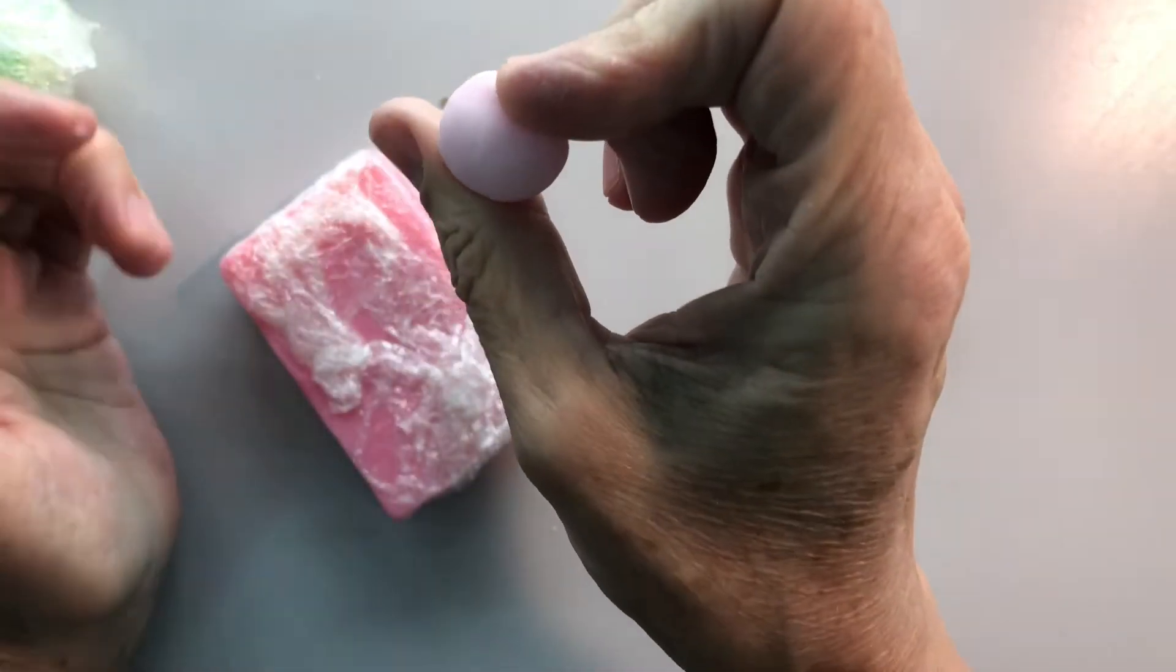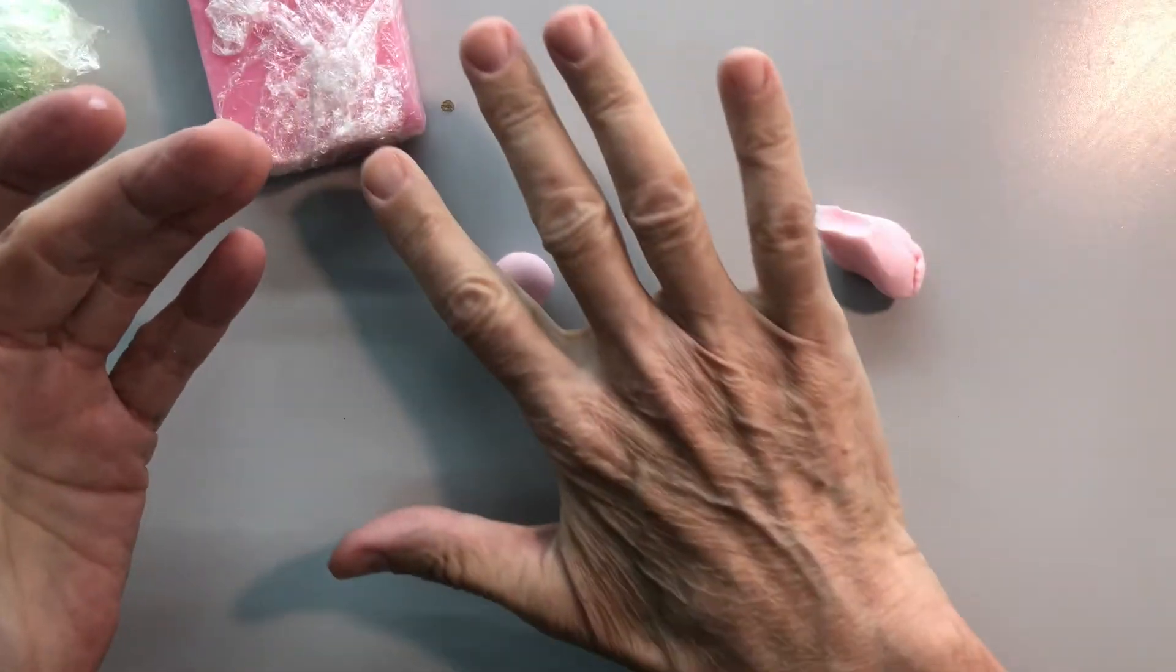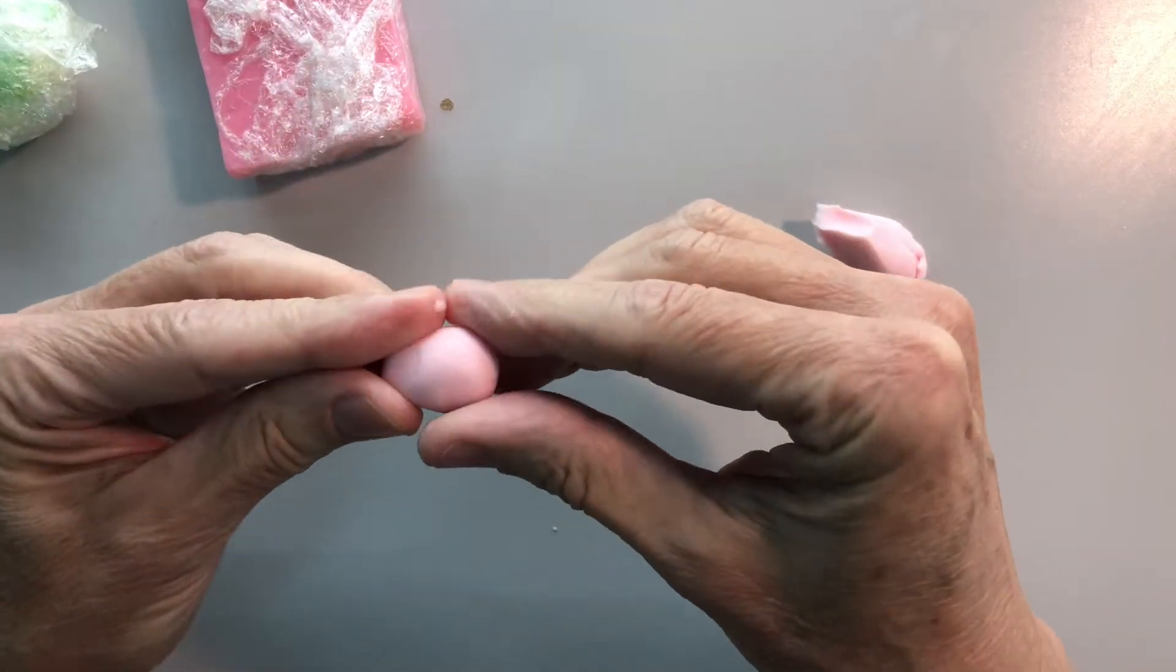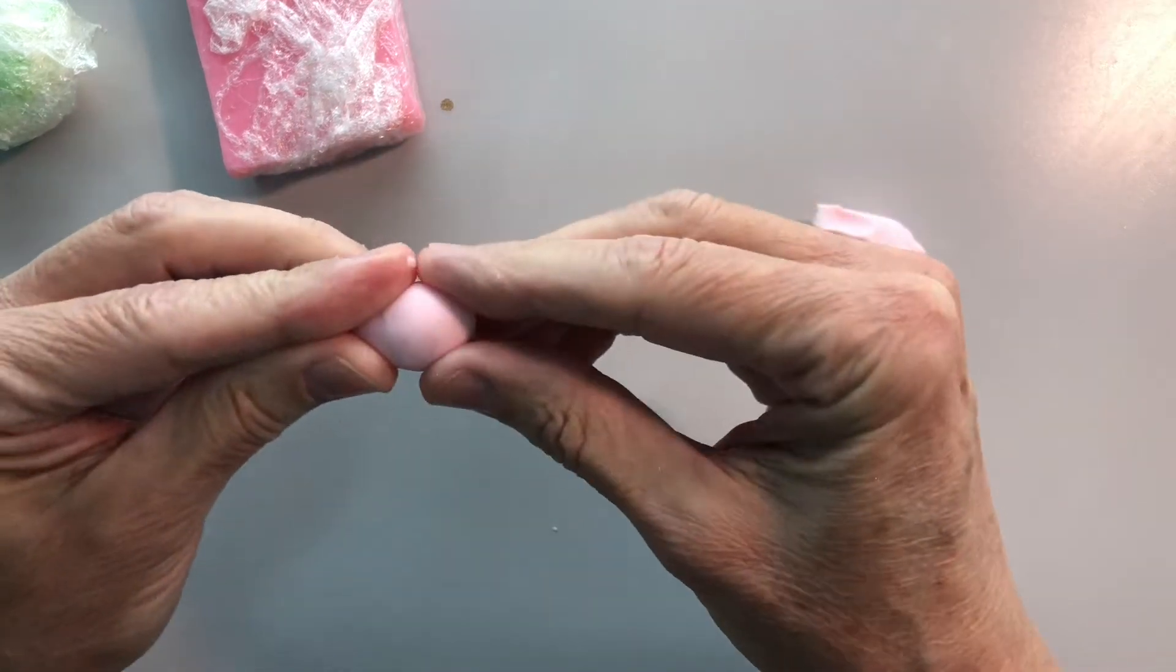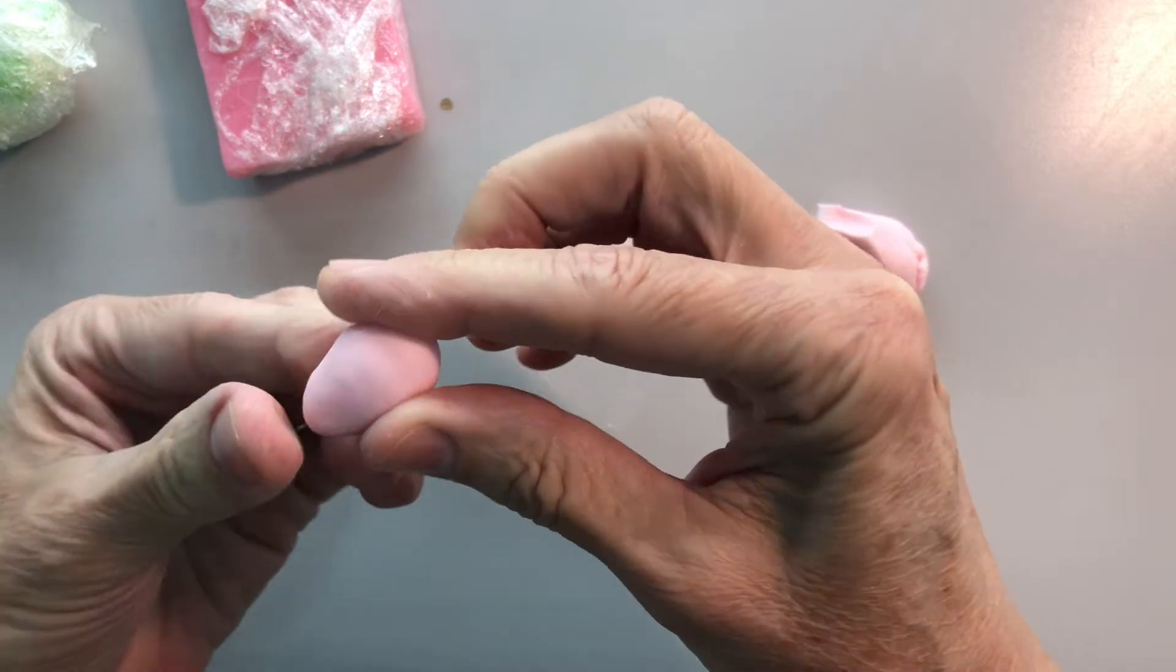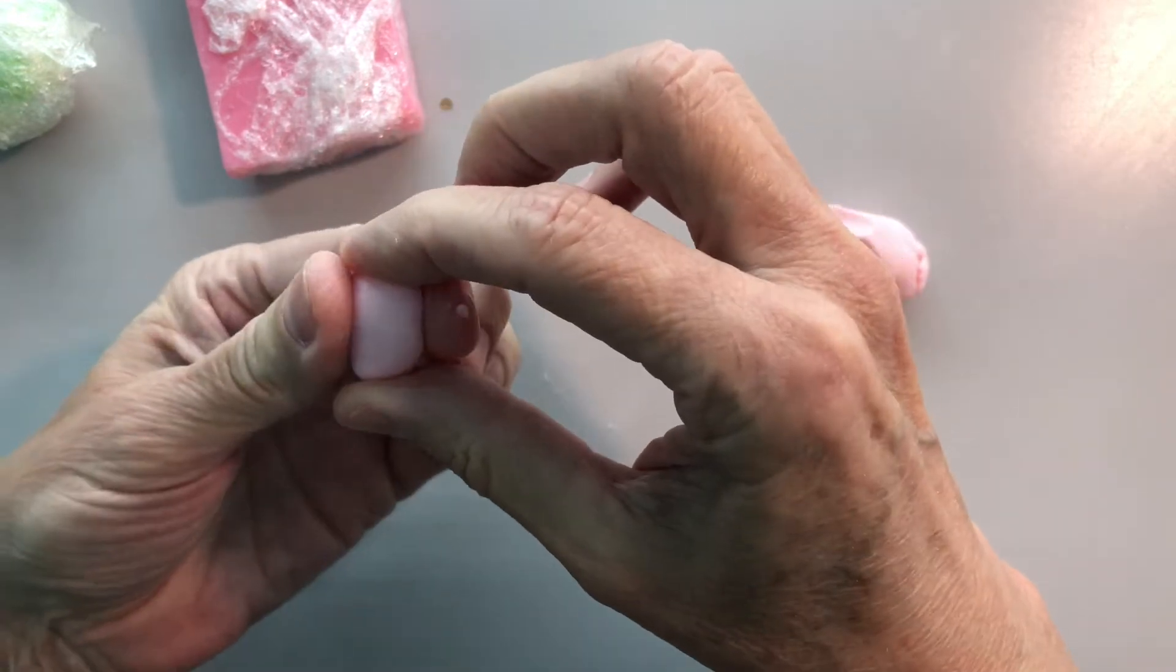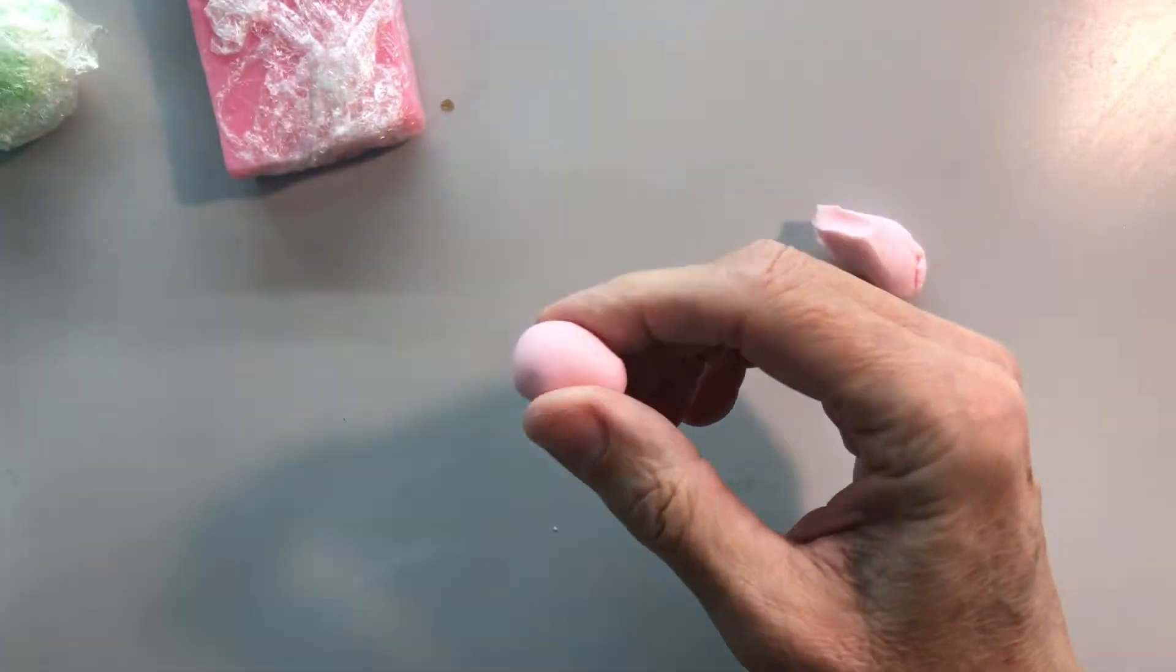So this is white, this is pink with a little bit of white, and I'm just different colors. And this is, for those who are new to the channel, this is Soap Dough, which is pliable, cold-processed, handmade soap.